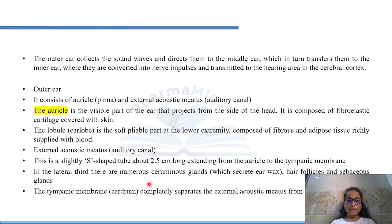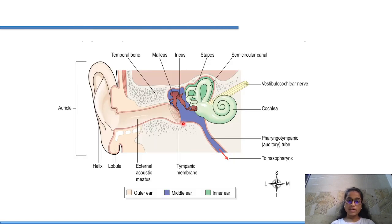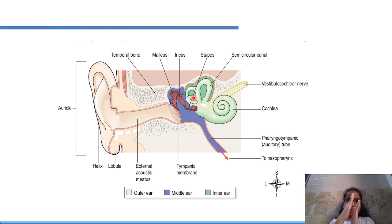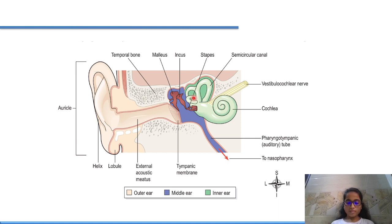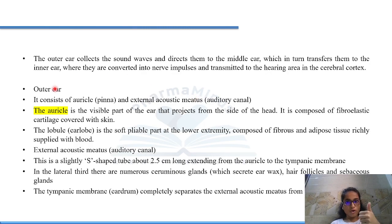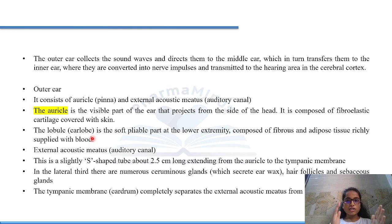The tympanic membrane (ear drum) completely separates the external acoustic meatus from the middle ear. It acts like a barrier — the outer ear is complete up to the tympanic membrane, and on the other side of the tympanic membrane begins the middle ear. So the tympanic membrane consists of the auricle and external acoustic meatus, with the lobule made of fibrous and adipose tissue.